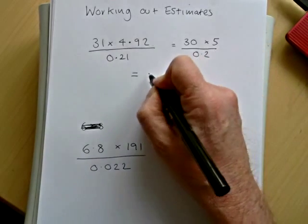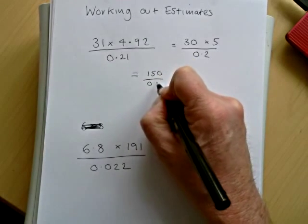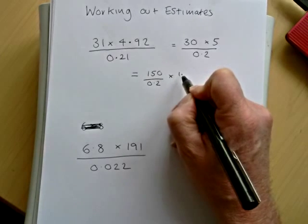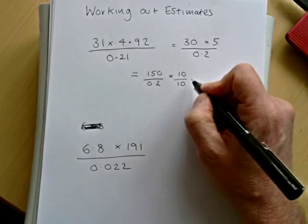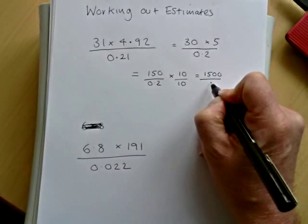So we could write the top as 150, but we've got this awkward 0.2. So what we can do is multiply both bits by 10. And if we do that, then we will get 0.2 up to 2.